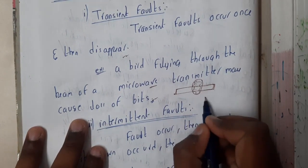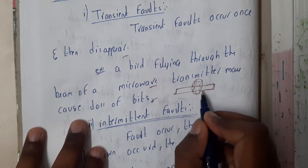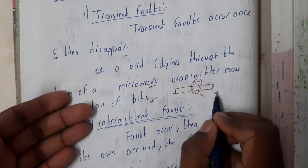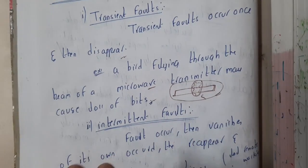This is a transient fault because the bird will not come every time. There could be a chance, but this is transient and it occurs rarely.